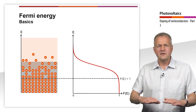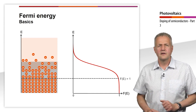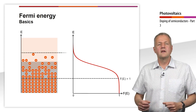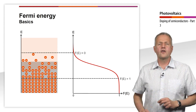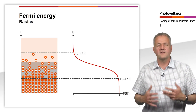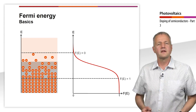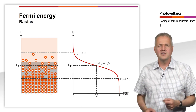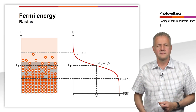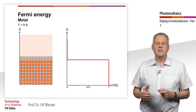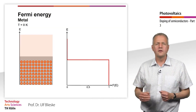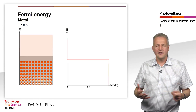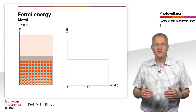At low energies, all states are occupied — the Fermi-Dirac function has a value of 1. At high energies, none of the states is occupied by an electron — the Fermi-Dirac function has the value of 0. The Fermi energy is the energy at which the occupation probability is exactly 50%. At a temperature of 0 Kelvin, the Fermi-Dirac function assumes a jump function, and all electrons are in the energetically most favorable state.